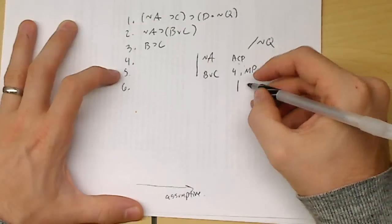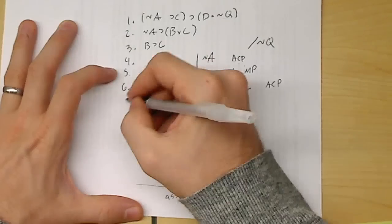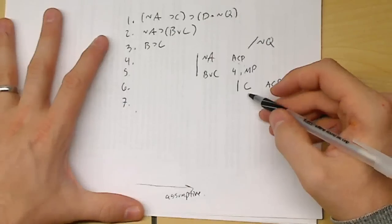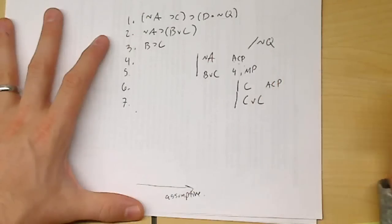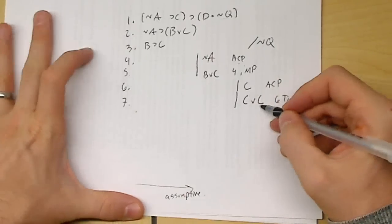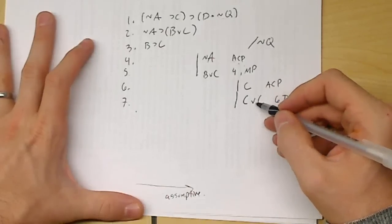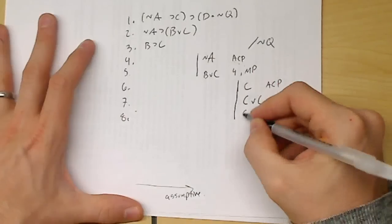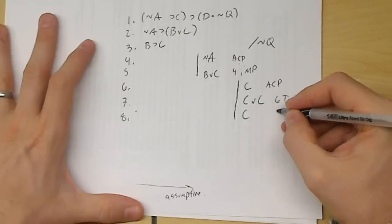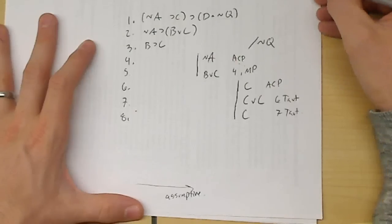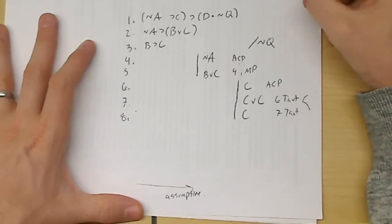If I assume C, I could use the rule of tautology to get C∨C — that's line six tautology. And we can also use tautology to reduce C∨C back to C — that's line seven tautology. So that means I could conclude C→C, which is a truism. We can actually use the rule of tautology to validate this sort of thing. So that means let's discharge it. I can say if you have C, then you have C — that's lines six through eight, conditional proof.